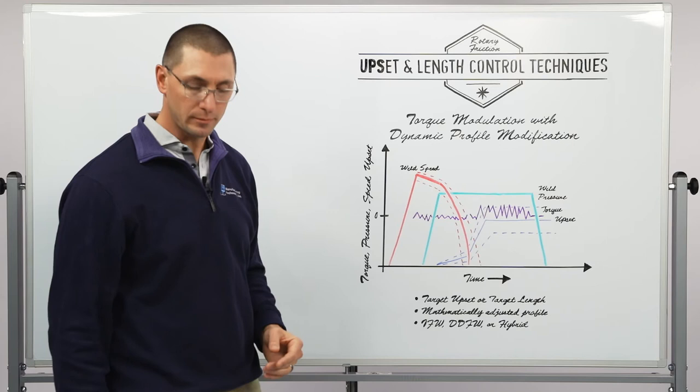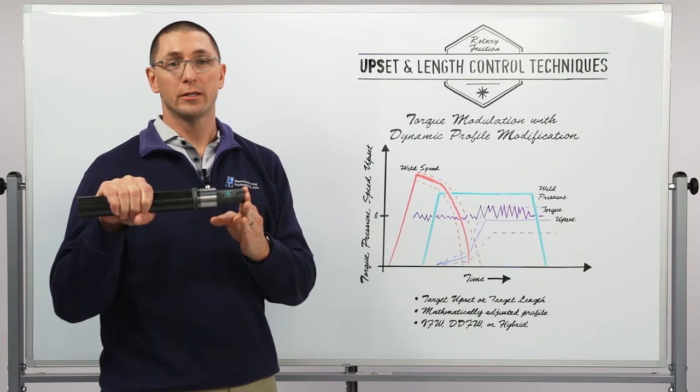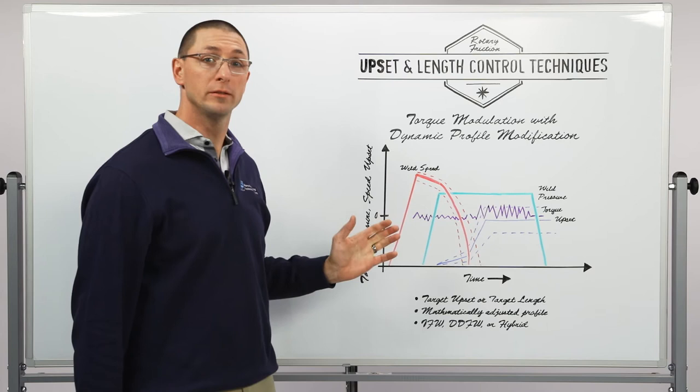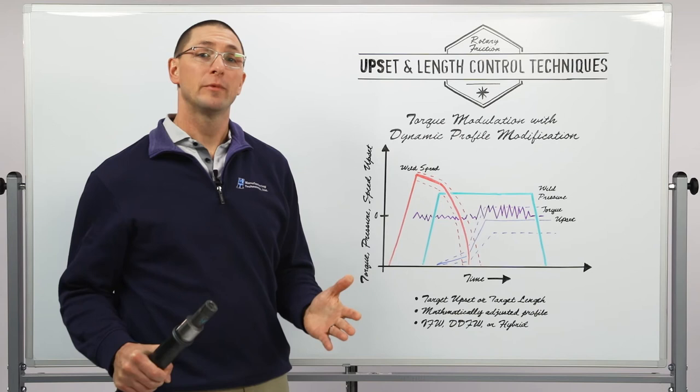But as I look at my incoming part lengths, if they're too long I need to create more upset. So now I need to adjust my upset profile mathematically in order to get more upset. And I may need to increase my target weld energy or starting weld speed in order to create more energy to start with.